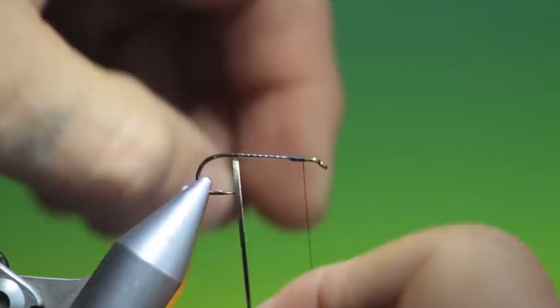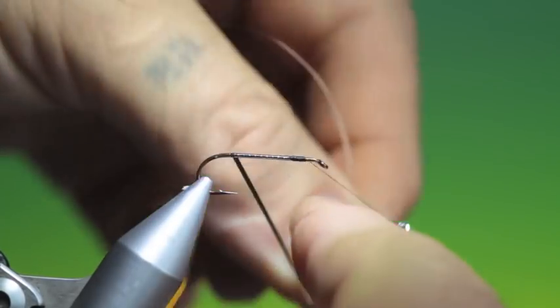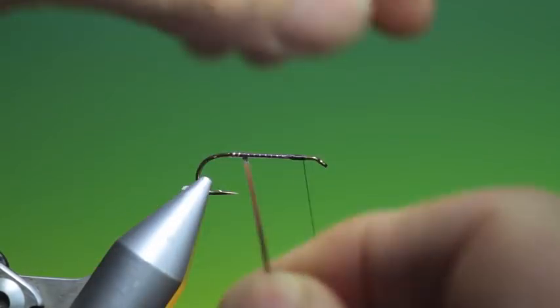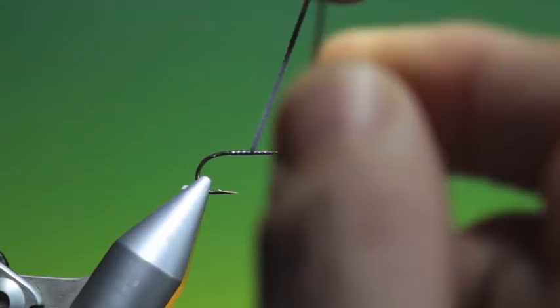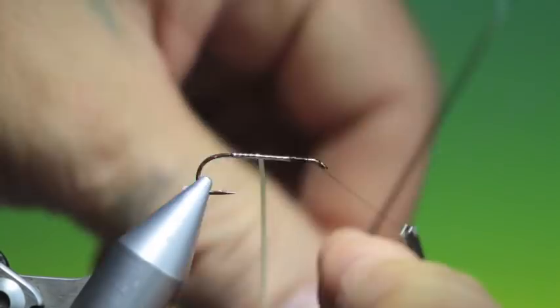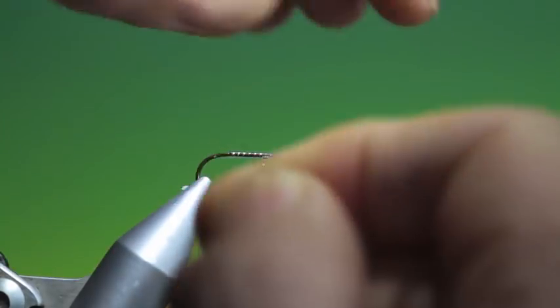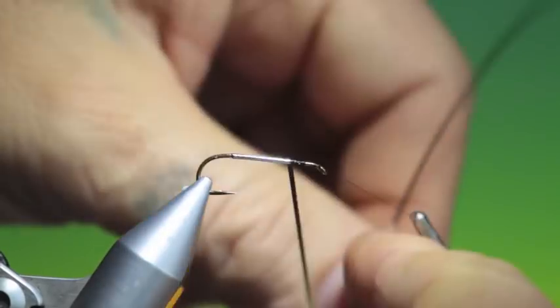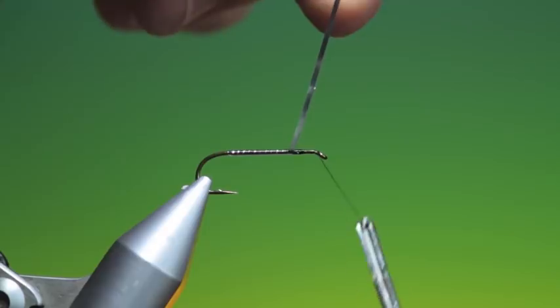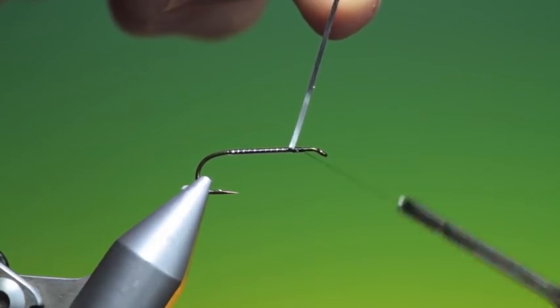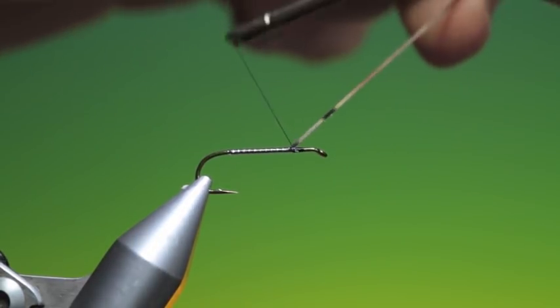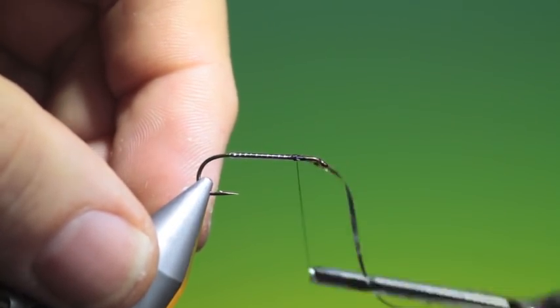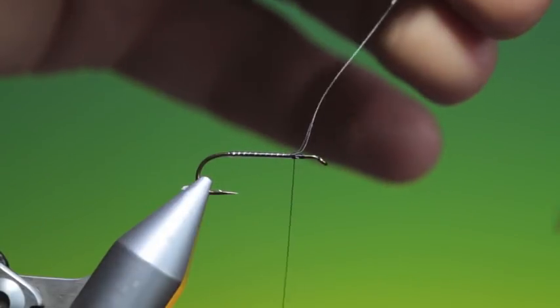That's good. Back here and then we'll reverse it, back towards the tying thread over the first layer of tinsel and just wind this back a wee ways. Give it three turns.